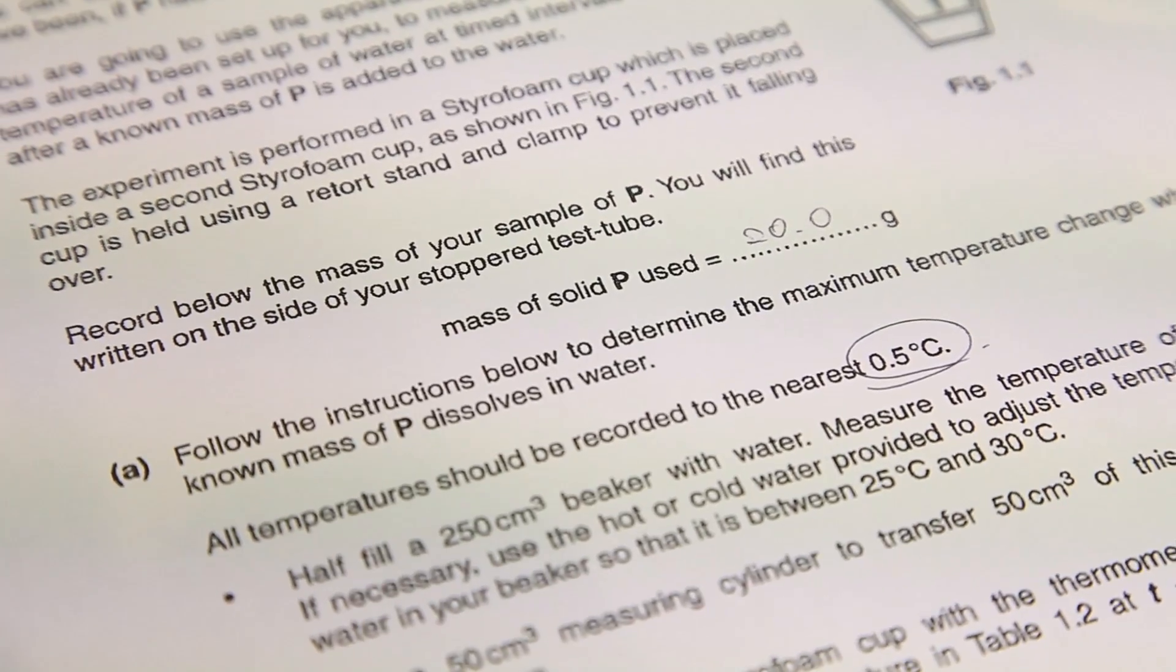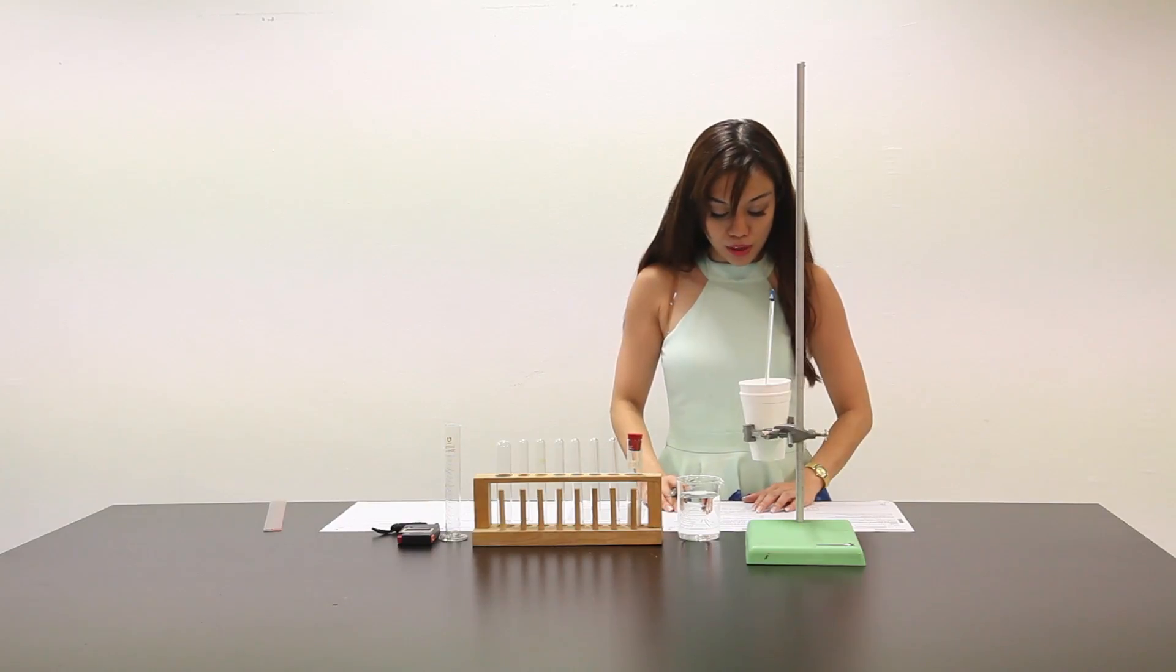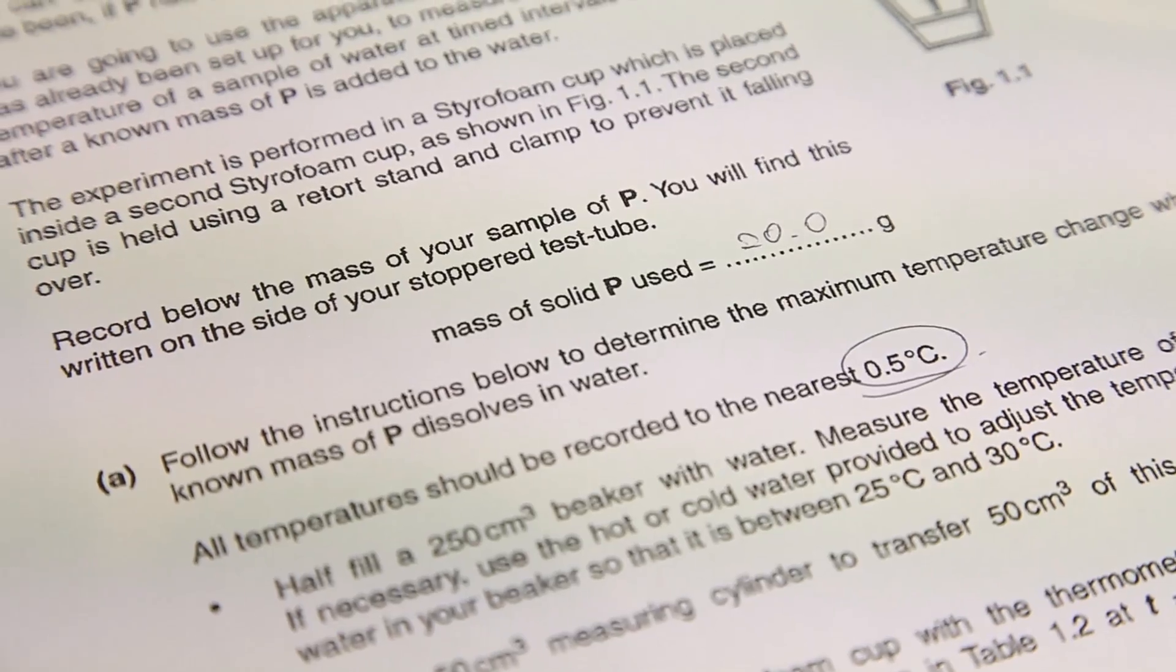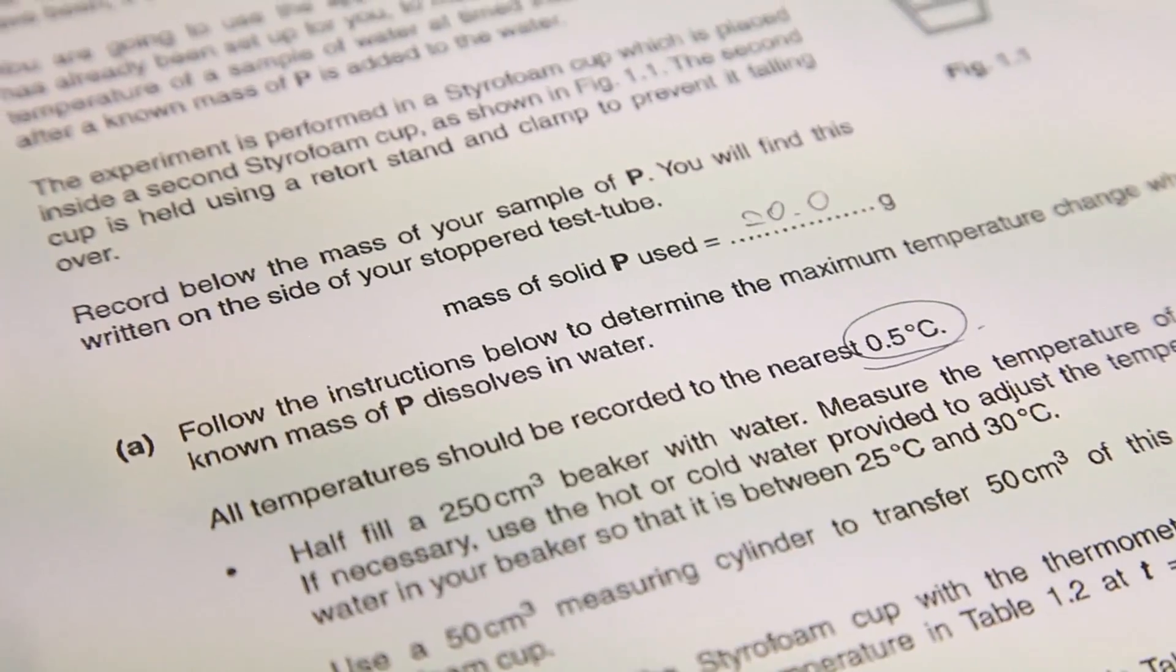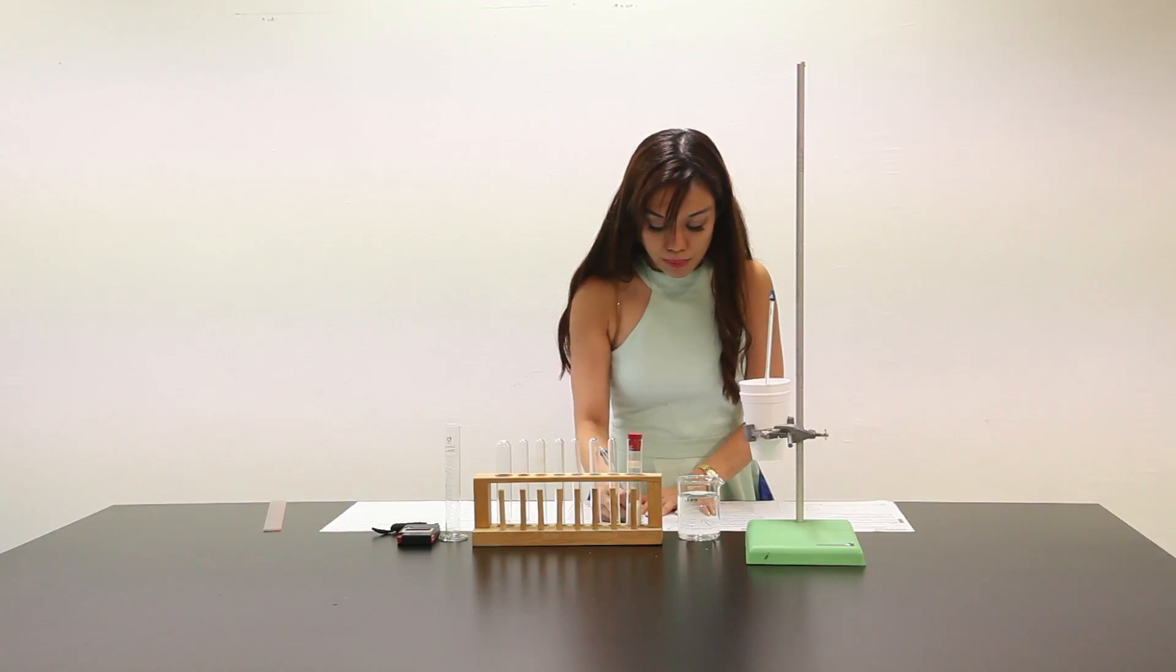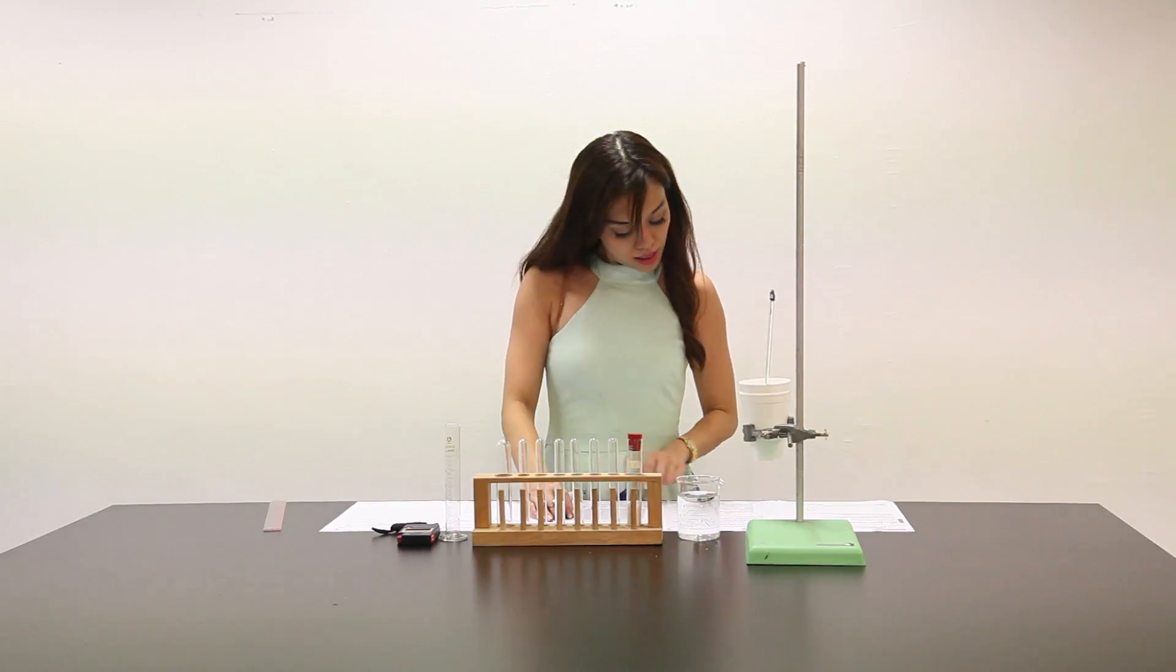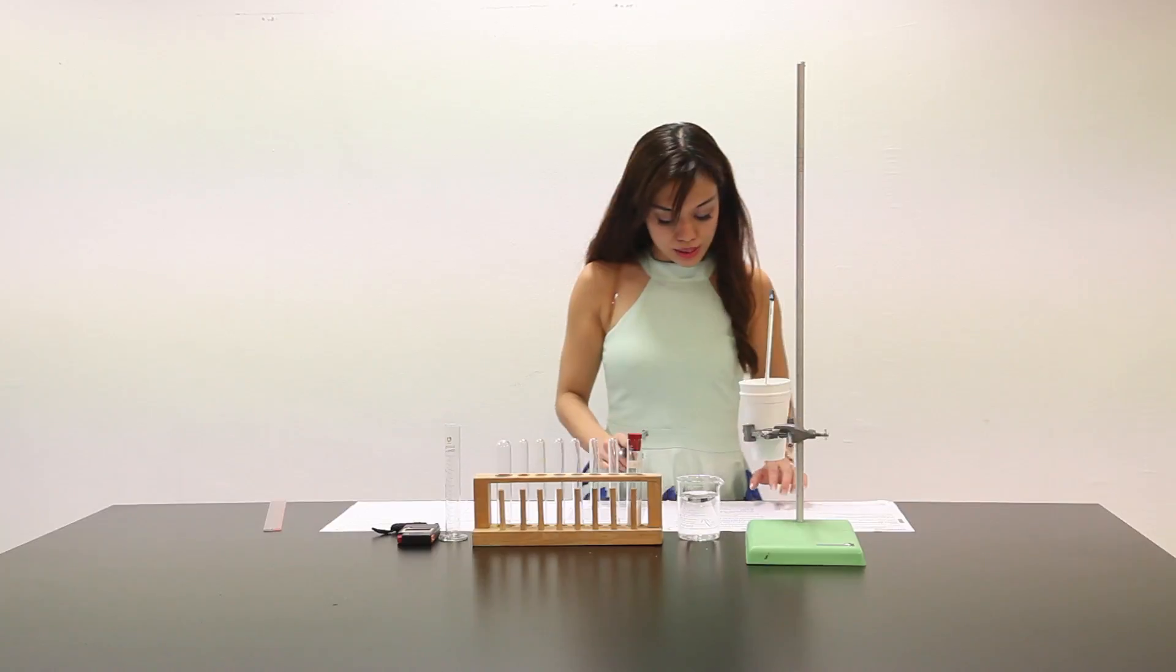Follow the instructions below to determine the maximum temperature change when a known mass of P dissolves in water. All temperatures should be recorded to the nearest 0.5 degrees Celsius. Let me write that the temperature is in 0.5 degrees Celsius increments, so I remember that it's 1 decimal place and only at 0.5 degrees Celsius.